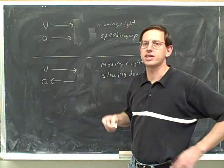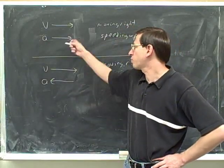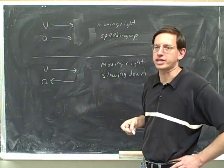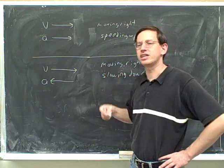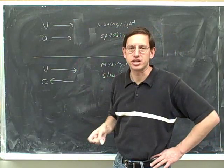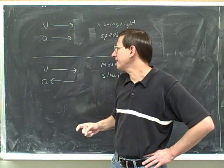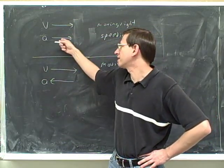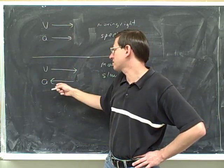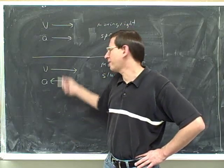We've seen that the way to interpret the acceleration is to compare which way it is pointing with the way that the velocity is pointing — you compare their directions. One thing I want to say parenthetically is we haven't talked about comparing the length of the acceleration and the length of the velocity. It doesn't make any sense to compare how long this arrow is and how long this arrow is. In these examples, I'm drawing the acceleration the same length as the velocity, but that's just for convenience.